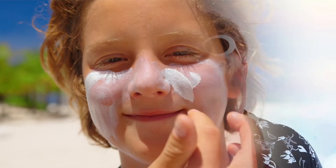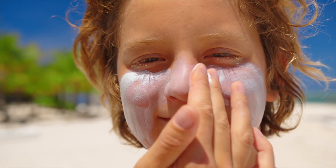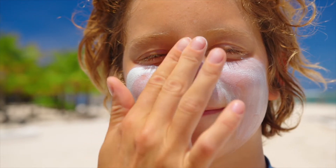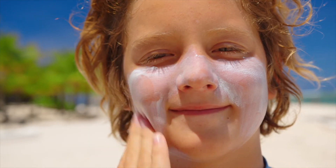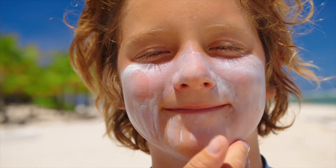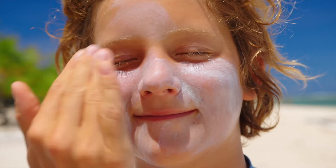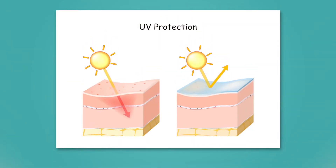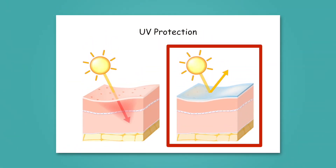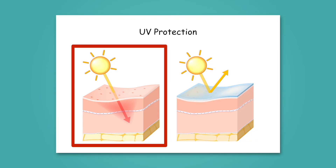Continued exposure to UV light can lead to more serious long-term health problems, including skin cancer. Most UV light from the sun is blocked from reaching the Earth by our atmosphere, but some still reaches us. That's why it's important to wear plenty of sunscreen when you're spending long periods of time in the sun. Sunscreen works by blocking the wavelengths of UV light, causing them to reflect rather than absorb into your skin.